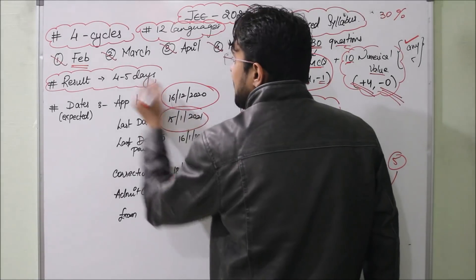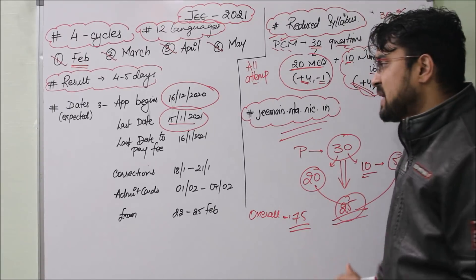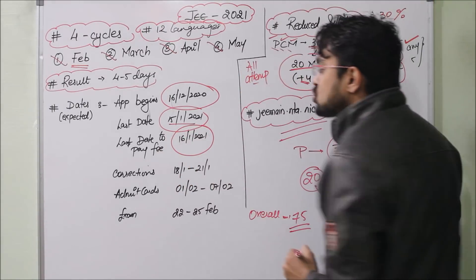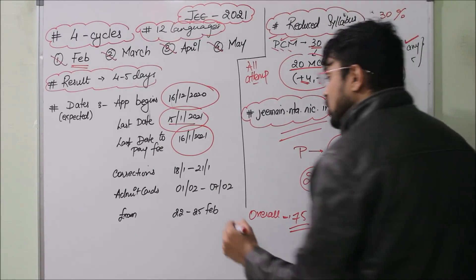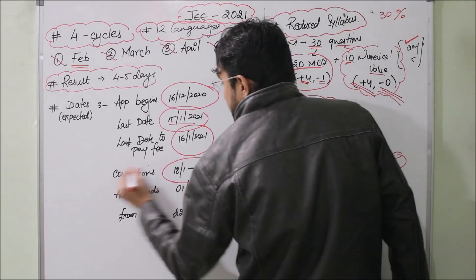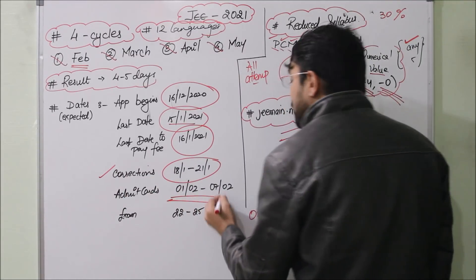February 15 or January 16 will be the last date. If you make any mistakes, then you will have corrections in February for 1 week.